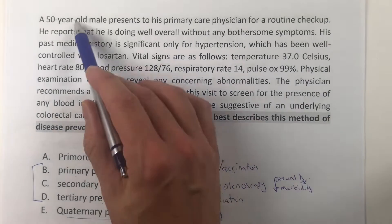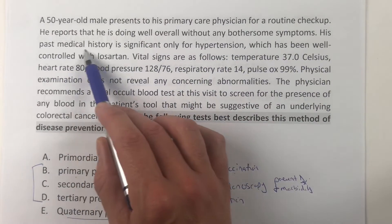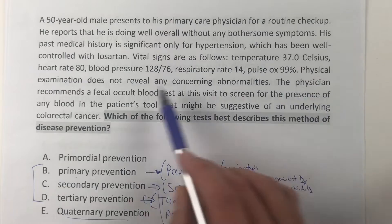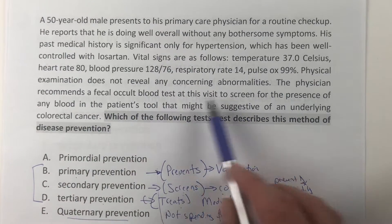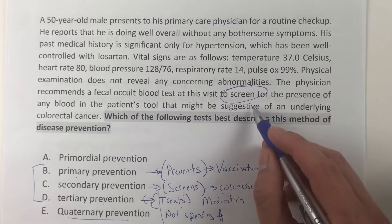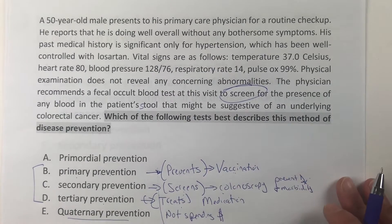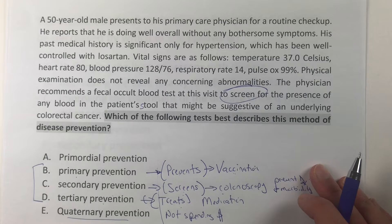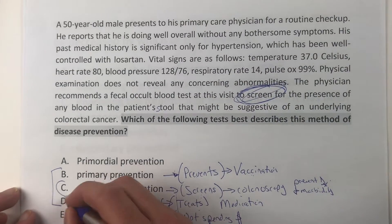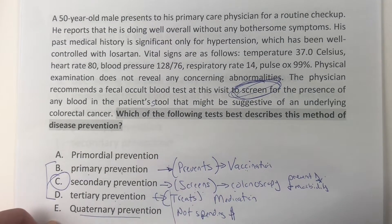Question one: a 50-year-old male presents to his primary care physician for a routine workup, doing well overall without bothersome symptoms; history significant for hypertension, well controlled. Vital signs and physical exam are unremarkable. The physician recommends a fecal occult blood test to screen for blood in the patient's stool that might be suggestive of underlying colorectal cancer. The fact that they gave you the keyword 'screen' means you jump all over secondary prevention — primary prevents, secondary screens, tertiary treats.